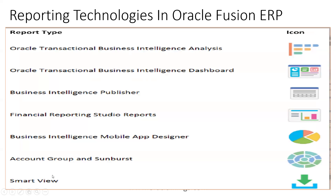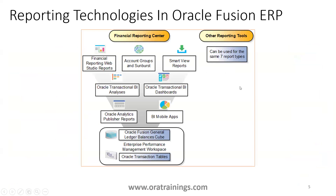If you observe the report type based on the icon, for Smart View the icon will look like this, and there are respective icons for the other different reporting technologies. In total there are seven reporting tools, which are again subdivided — based on transaction data or GL ledger balance cubes.